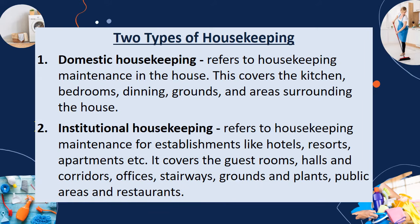There are two types of housekeeping: the domestic housekeeping and institutional housekeeping. The domestic housekeeping refers to the housekeeping maintenance in the house. This covers the kitchen, bedrooms, dining, grounds, and areas surrounding the house.